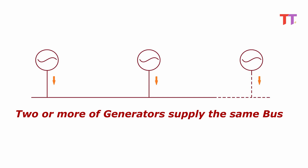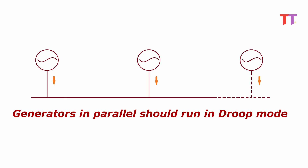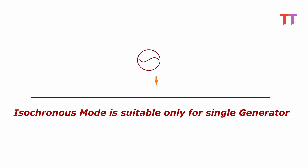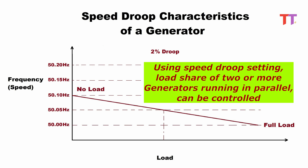Generally two or more generators supply the same bus. These generators in parallel should run in droop mode. In isochronous mode there is no scope for control of load share of generators, hence isochronous mode is suitable only for a single generator. Whereas using speed droop setting, load share of two or more generators running in parallel can be controlled.